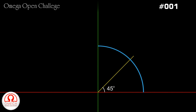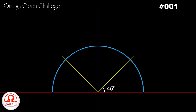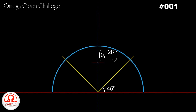Now let's bring another identical quarter circular ring and put it in the second quadrant. The center of mass of this quarter ring too must lie on its axis of symmetry. What we now have is a semi-circular ring of radius r. The center of mass of this semi-circular ring lies on the y-axis at a known coordinate. This center of mass must lie exactly midway between the center of masses of both the quarter rings. Therefore the center of mass of each ring must lie at height 2r by pi.